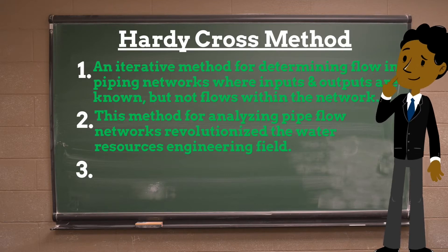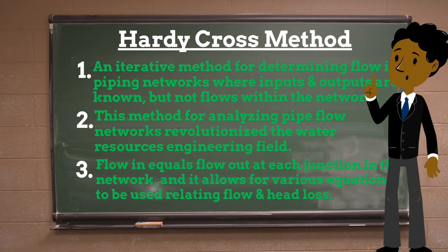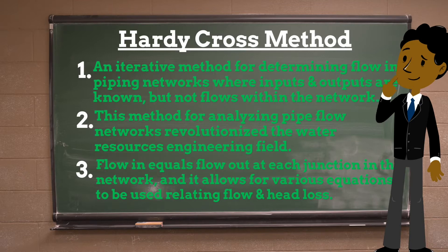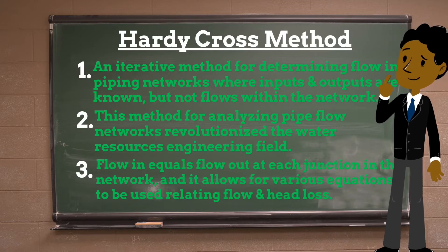Hardy Cross developed two methods for solving flow networks. Each method starts by maintaining either continuity or flow of potential and then iteratively solving for the other. The Hardy Cross method applies continuity of flow and continuity of potential to iteratively solve for flows in a pipe network. Conservation of flow means the flow in equals the flow out at each junction, and conservation of potential means the total directional head loss along any loop is zero.